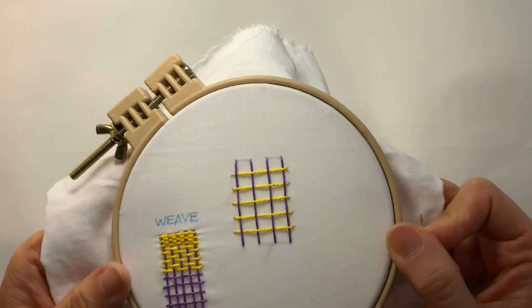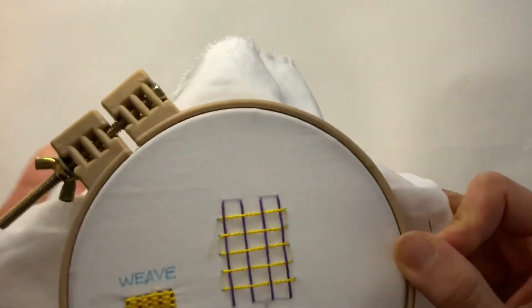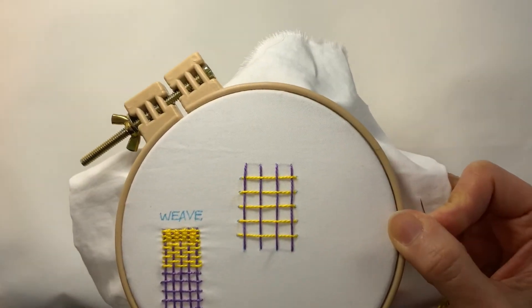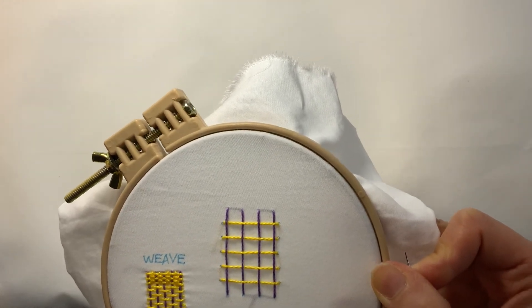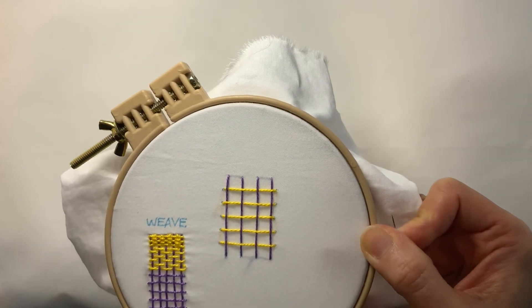So I would tie this off to finish it. But you can see here, this is the weave stitch. Really fun stitch to play around with and add lots and lots of texture to your embroidery.